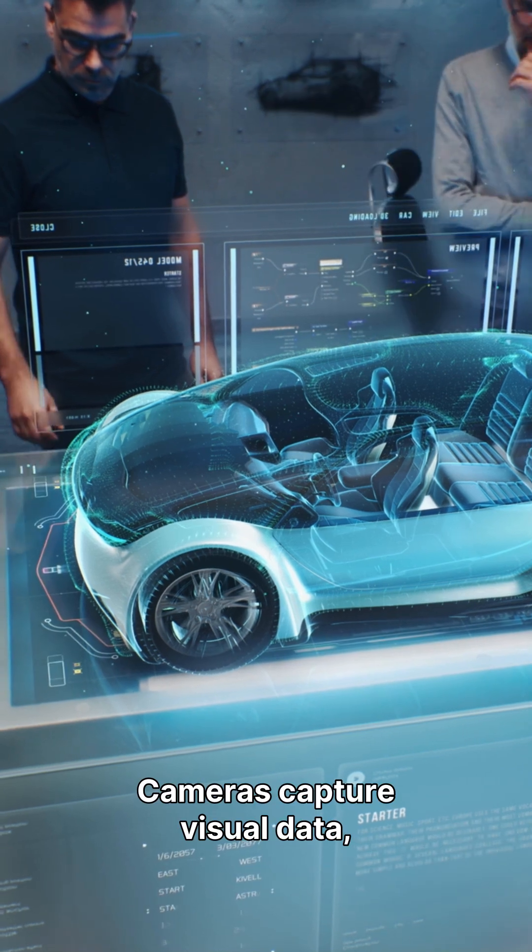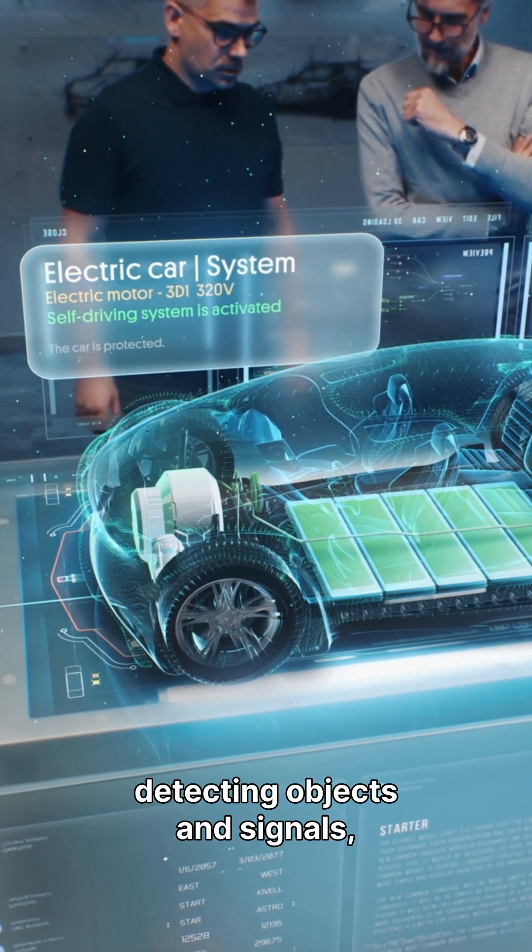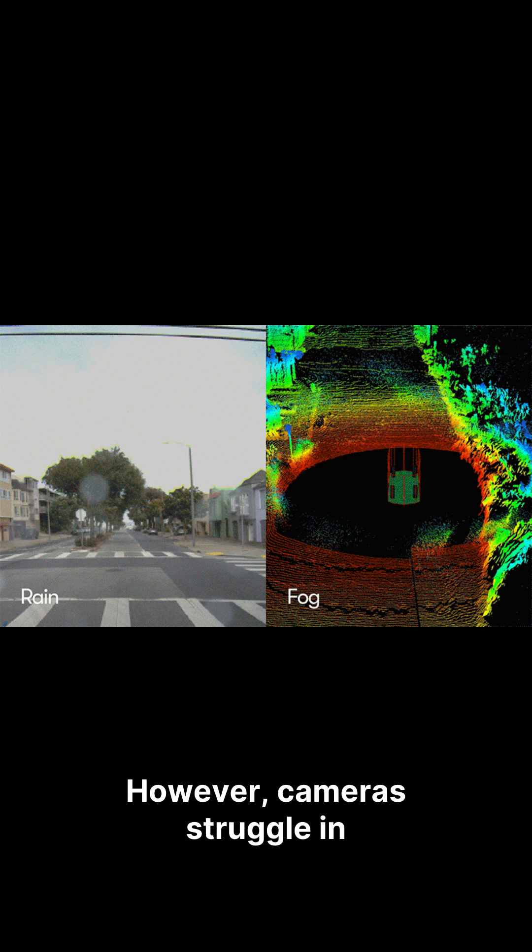Cameras capture visual data, detecting objects and signals similar to human eyes. However, cameras struggle in poor weather like rain or fog.